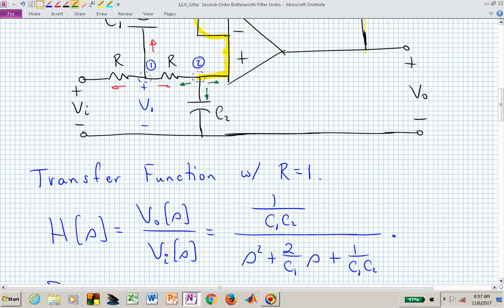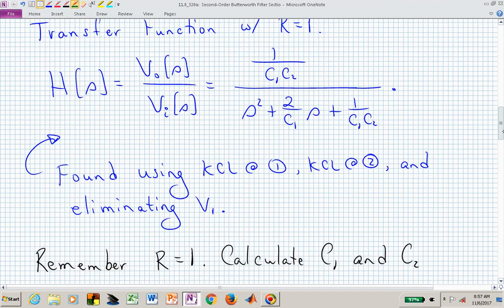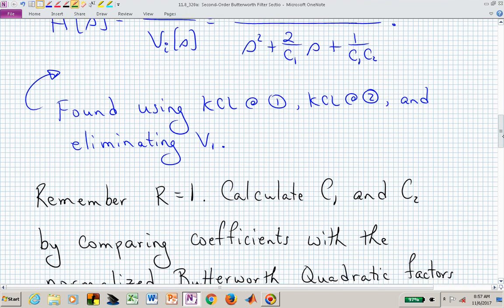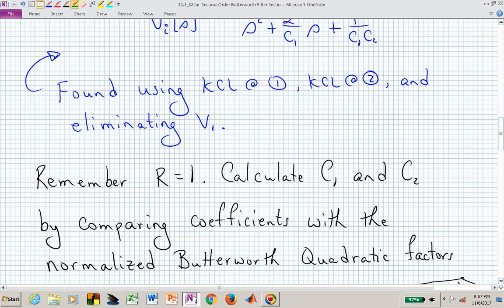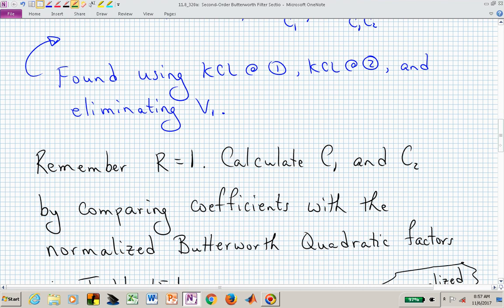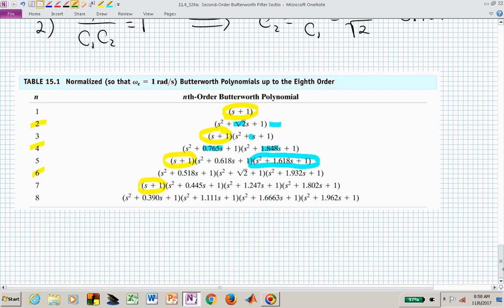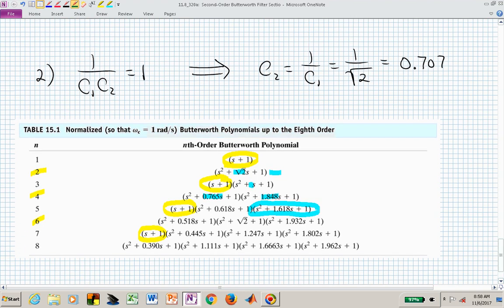And now, remember, we've set the R's to 1, and the C's we've left undetermined, or yet to be determined. And what we want to do is now calculate C1 and C2 by really just comparing coefficients in this transfer function with the appropriate coefficient from table 15.1. And the appropriate coefficients will depend on whether you're designing a second-order filter, a third-order filter, a fourth-order filter. Here, table 15.1, you can see that those different quadratic factors dealing with n equal 2 or n equal 5, those linear coefficients differ depending on the order of your Butterworth filter.